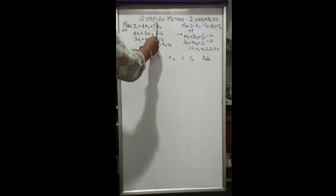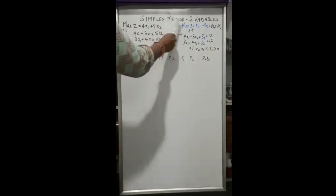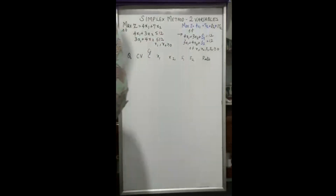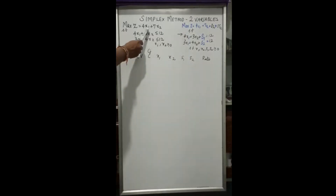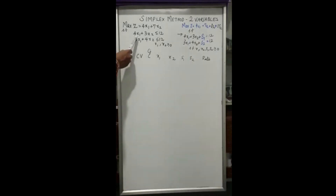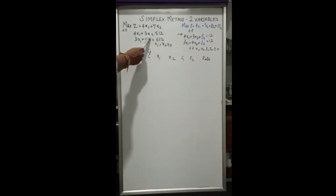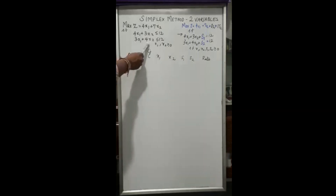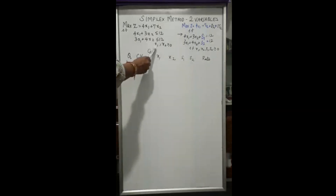We are going to learn the simplex method with two-way variables. This is a maximization problem: maximize Z = 4x1 + 7x2, subject to the constraints 4x1 + 3x2 ≤ 12, 3x1 + 4x2 ≤ 12, and x1, x2 ≥ 0.